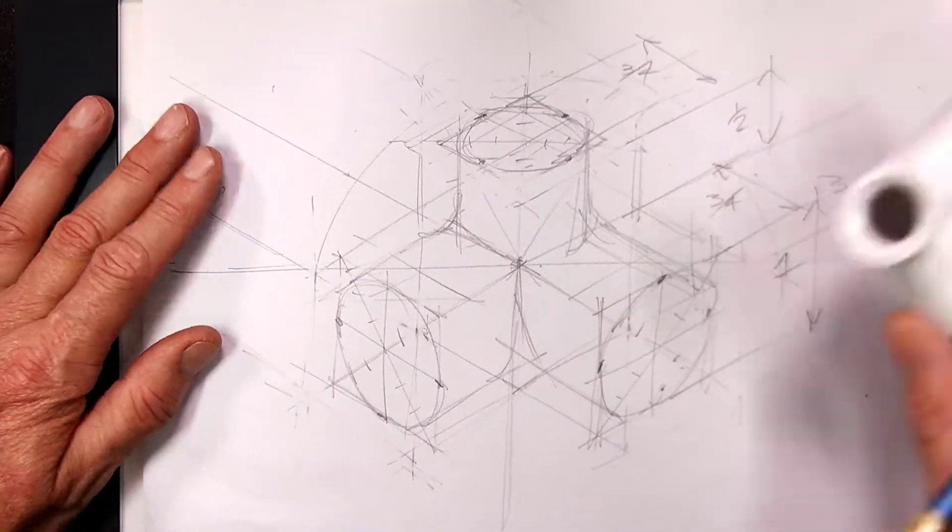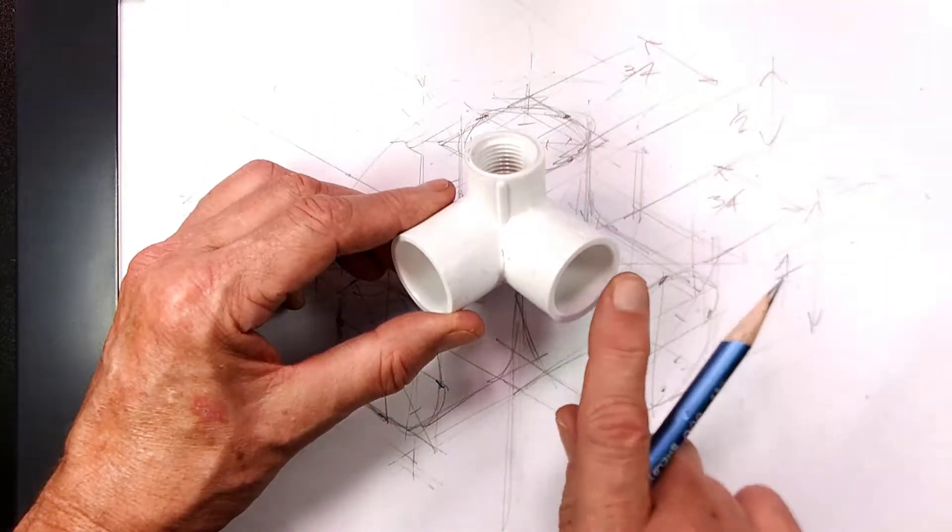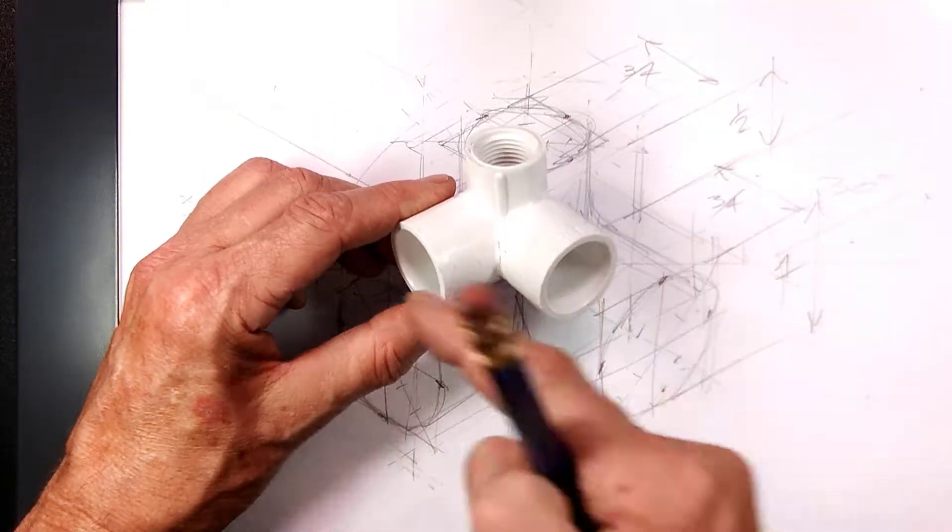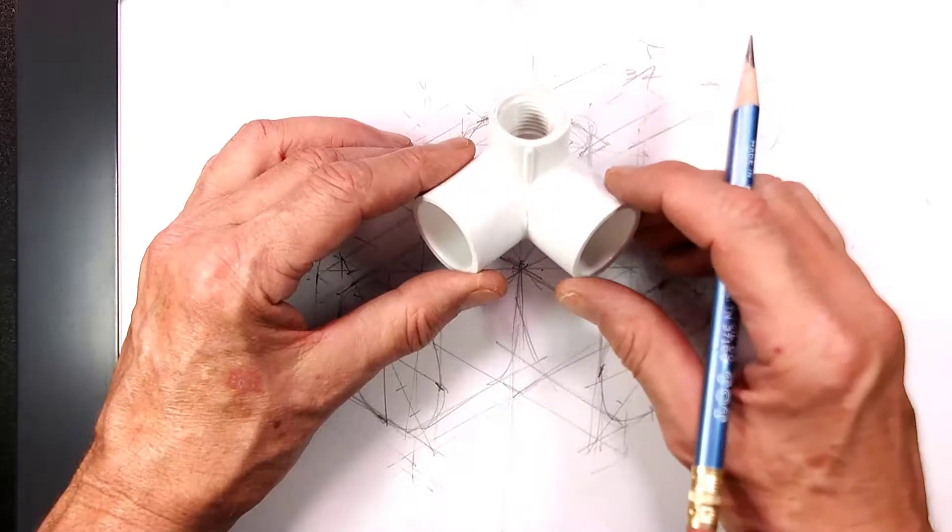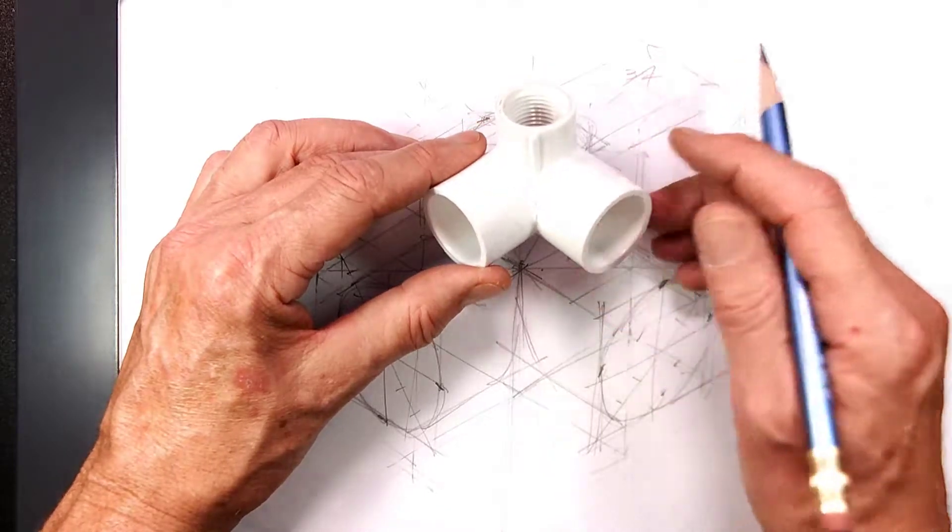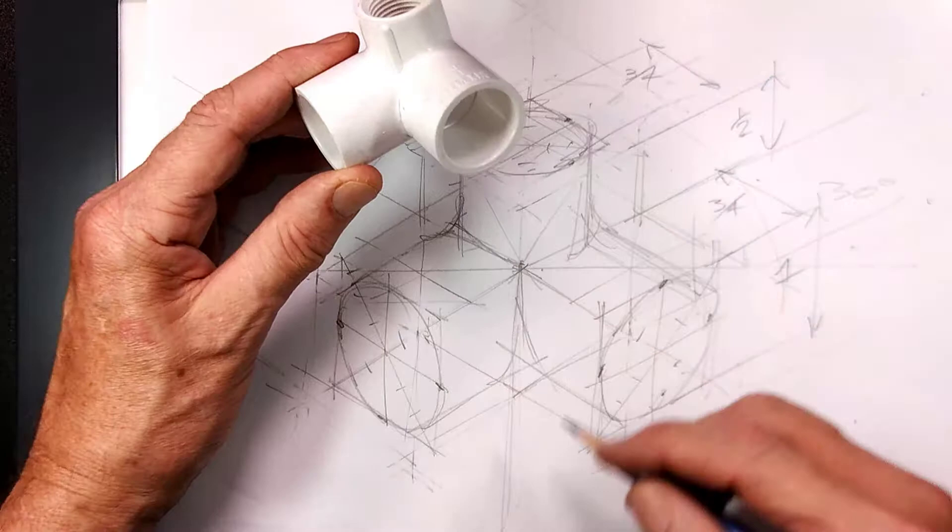So what we have now is this: three-quarters diameter, one diameter, one diameter. And now we have the basic structure of this PVC connector. So now I'm going to darken some lines and add some shading.